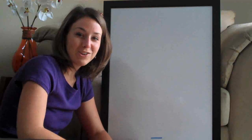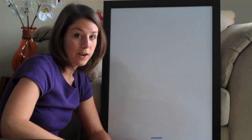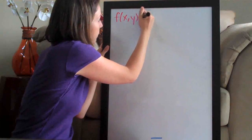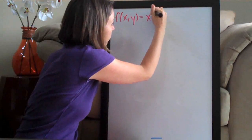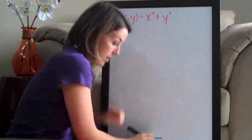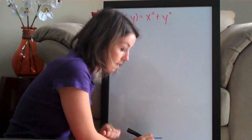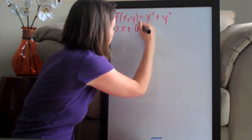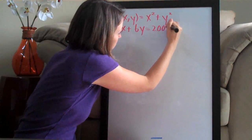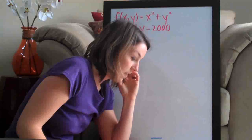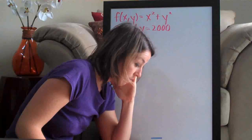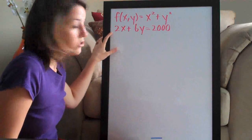Hi everyone! Welcome back to integralcalc.com. We're going to be doing a Lagrange multiplier problem today. The equation they give us is f(x,y) = x² + y², and the constraint equation they give us is 2x + 6y = 2,000. They ask us to use Lagrange multipliers to find maximum or minimum points, if any, of this function subject to this constraint equation.